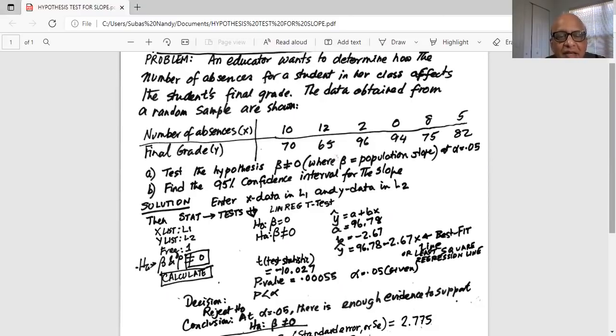X list is L1, Y list is L2. Frequency should be 1. And the fourth line is the alternate hypothesis. Beta is the population slope and rho. Rho is Greek small r. It is the population correlation coefficient. And your cursor should be on not equal to 0. Remember that is the alternate hypothesis. So put the cursor on not equal to 0 for both and hit enter.